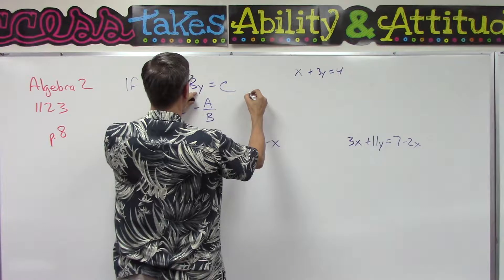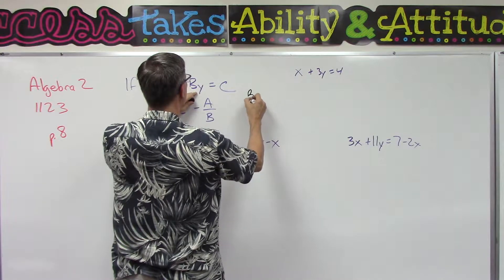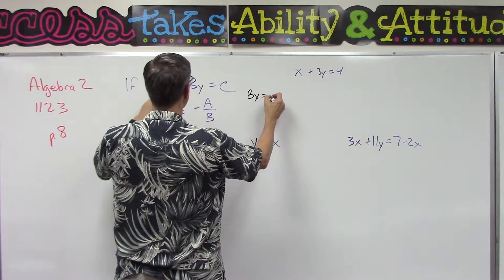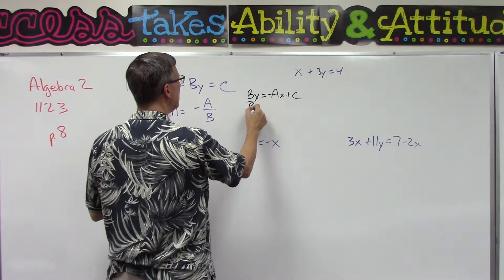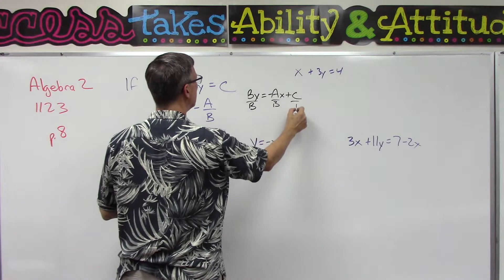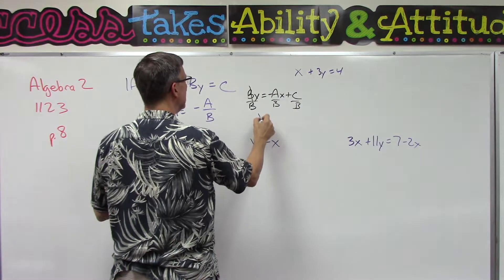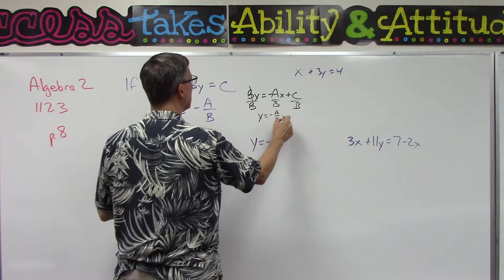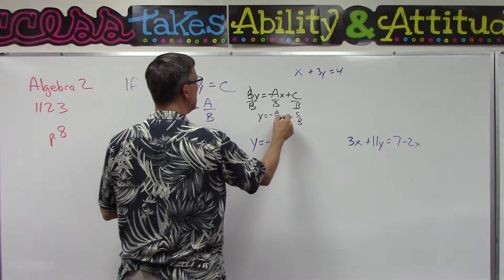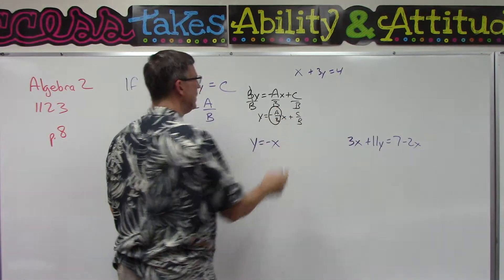y equals negative ax plus c, and then divide by b. That would cancel, so you would have y equals negative a over b times x plus c over b. But this part right here in front of x represents the slope.